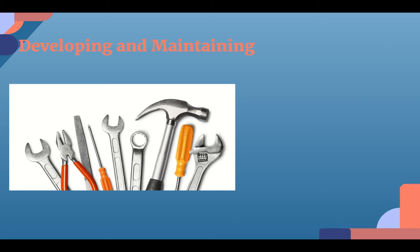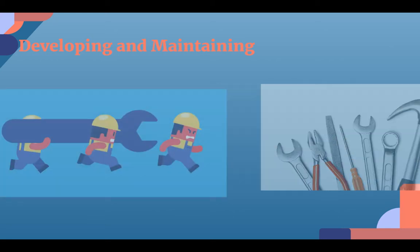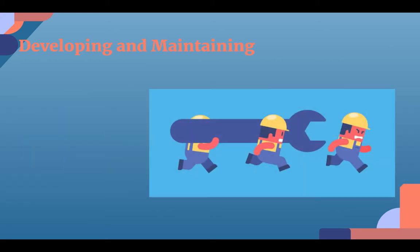Software maintenance in software engineering is the modification of a software product after delivery to correct faults and to improve performance or other attributes. The original producer and designer of the software will create options for the end user to then modify the software as they need, and allow for them to maintain the software for those needs.